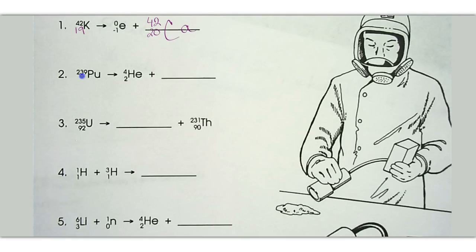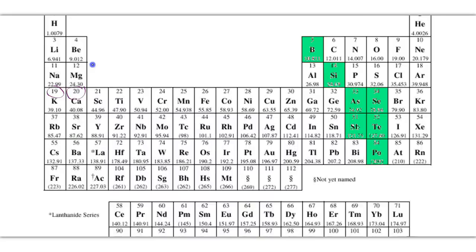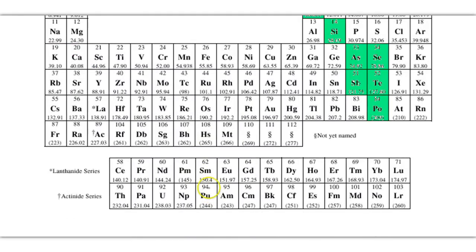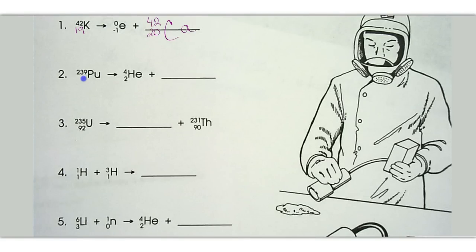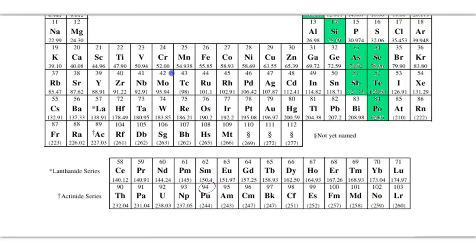Number 2, plutonium with a mass of 239 has an atomic number of 94. So we'll place a 94 here. Now, 239 minus 4 equals 235. 94 minus 2 equals 92. And when we look on our periodic table, 92 is the symbol uranium.